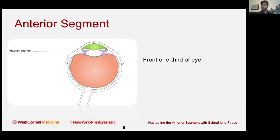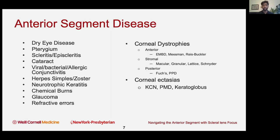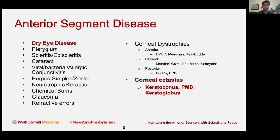The anterior segment is the front third of the eye — what we see in front of the slit lamp. We break it down into the cornea, conjunctiva, sclera, the anterior chamber, the lens, zonules, up until the front vitreous face. There is a wide spectrum of anterior segment disease, ranging from dry eye disease all the way to herpetic conditions, cataracts, corneal dystrophies, and degenerations. I wanted to focus on two conditions we all commonly encounter: dry eye disease and corneal ectasias. There are also great speakers later covering glaucoma.